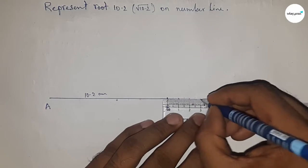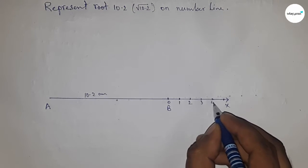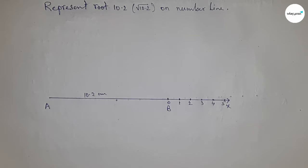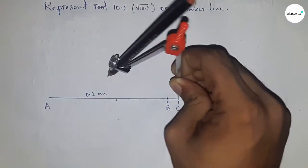Mark the numbers: zero, one, two, three, four, five, and so on. This is point C. Next, bisect the line AC. Take greater than half of AC and draw arcs.